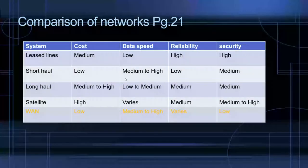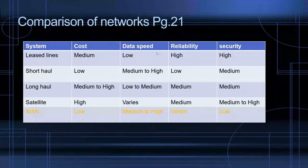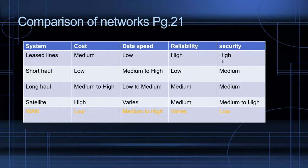A comparison chart shows leased line, short-haul, long-haul, satellite, and WAN in relation to cost, data speed, reliability, and security. Wireless as usual has the lowest security, while wired has the highest security and reliability. This table is fairly logical in its layout.